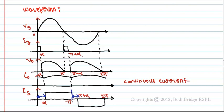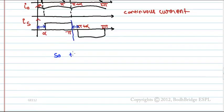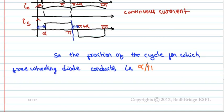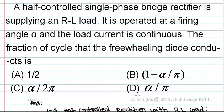So, in one cycle, the fraction of freewheeling diode action is alpha. Therefore, the fraction of the cycle for which the freewheeling diode conducts is alpha by pi. The answer is option D: alpha by pi.